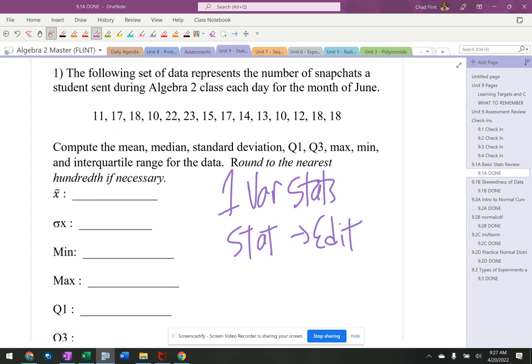All right, so stat, edit. My lists are clear, all right, so there's nothing in there. If your lists aren't clear, you got to go up to the top, hit clear, and then enter. All right, and then I'm going to type in my information.